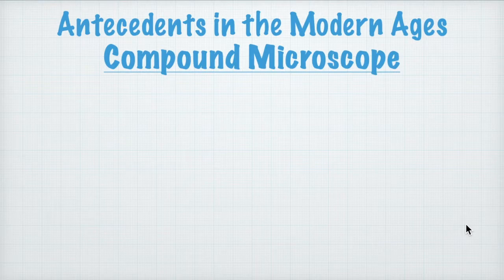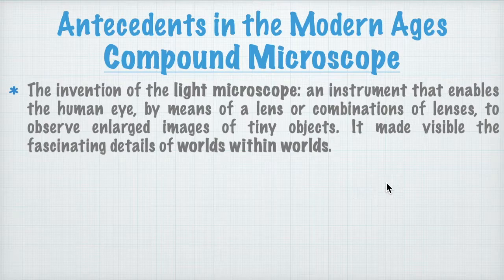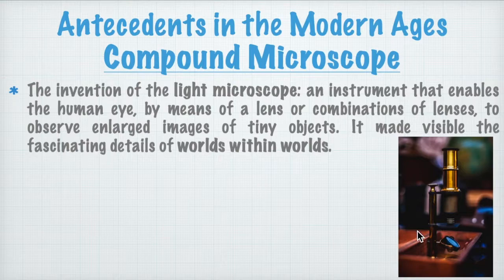The invention of this light microscope — this is an instrument that enables the human eye, by means of a lens or combination of lenses, to observe and enlarge images of very tiny objects. It made us see the fascinating details of the worlds within worlds — the micro world, in fact. This is one of those early compound microscopes.